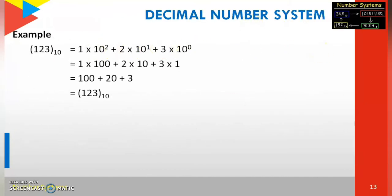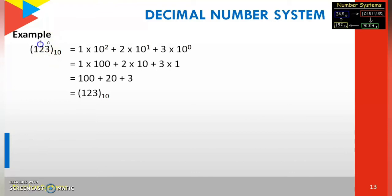Decimal number 123 base 10. The base value is always represented below the number. We multiply each digit by powers of 10 starting from 0. The position of 3 is the 0th position, so 3 into 10 power 0. The position of 2 is the 1st position, so 2 into 10 power 1. The position of 1 is the 2nd position, so 1 into 10 power 2. 10 power 2 equals 100, so 1×100 + 2×10 + 3×1 = 123 base 10.